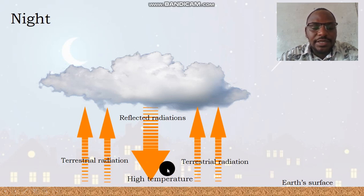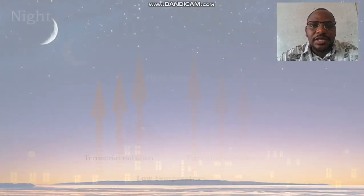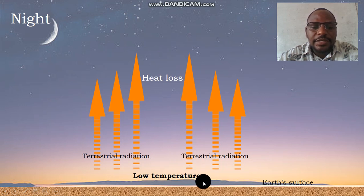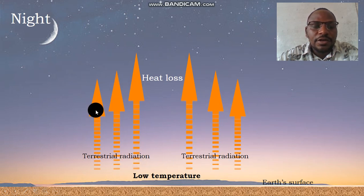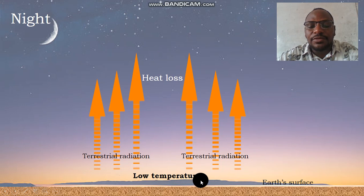A night with clouds will definitely mean high temperatures, especially when the day had no clouds. What about the night without clouds? All the heat energy which was absorbed by the Earth during the day is lost into the atmosphere through terrestrial radiations. This heat loss will cause a deficiency of heat energy on the Earth's surface, leading to low temperatures, especially when we had a day without clouds.